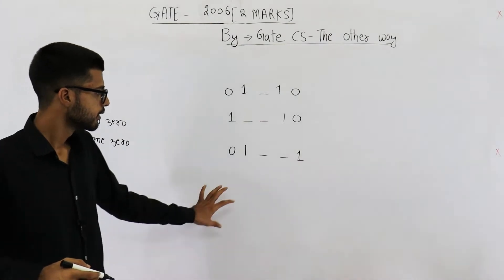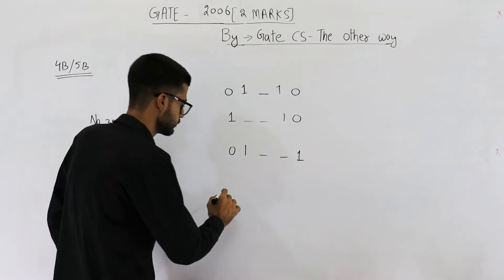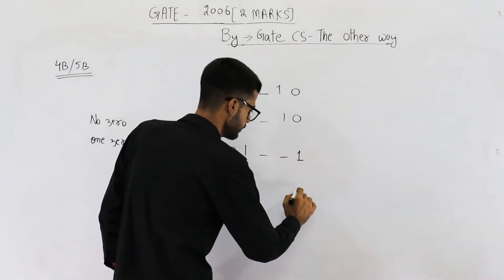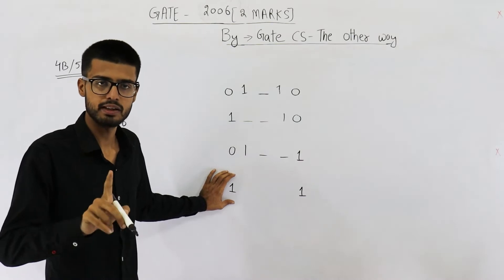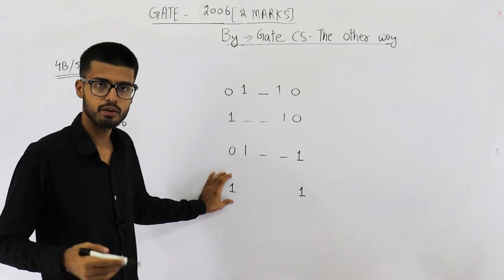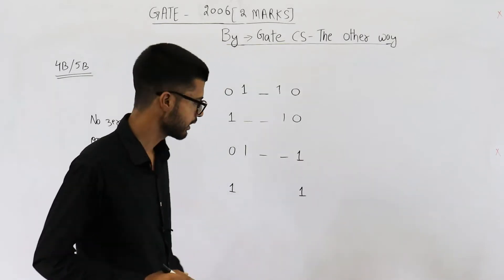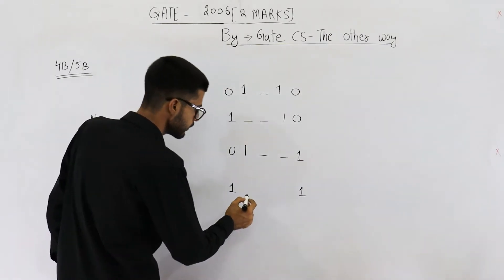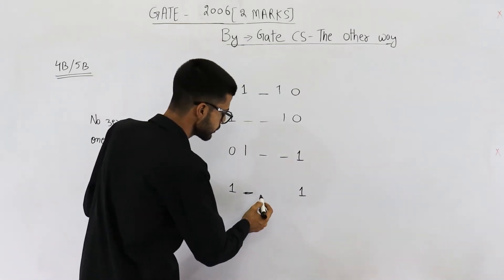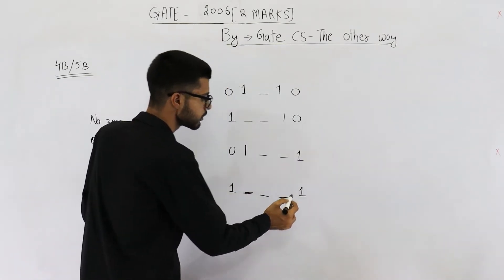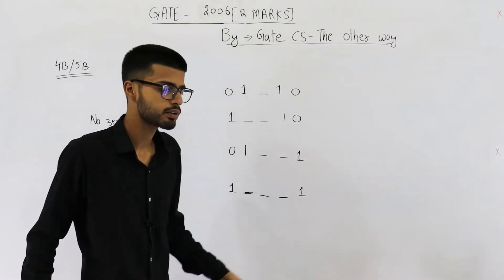The last case is where you have a one at the beginning and a one at the ending. The condition of at most one leading zero is satisfied because having no zero also falls under that condition. Similarly for trailing zeros. So these three middle bits can each be of your choice — you can write anything in those three places.